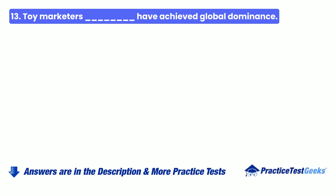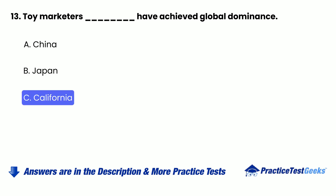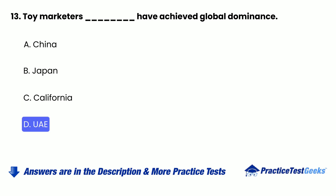Question 13: Toy marketers blank have achieved global dominance — A. China, B. Japan, C. California, D. UAE.